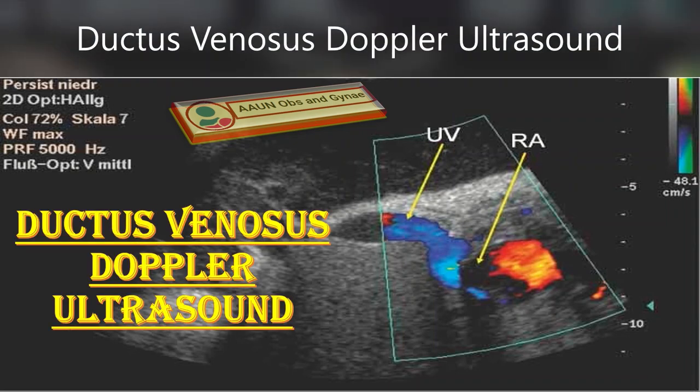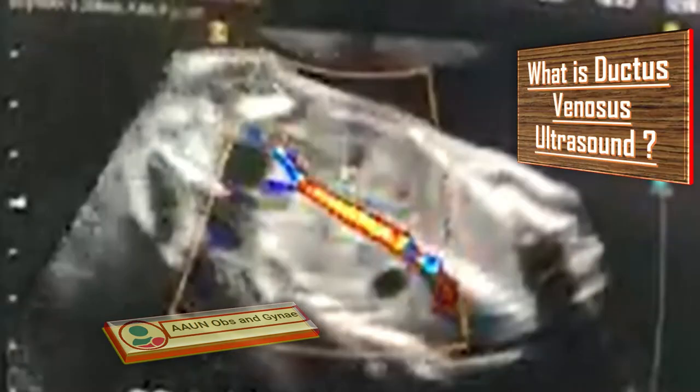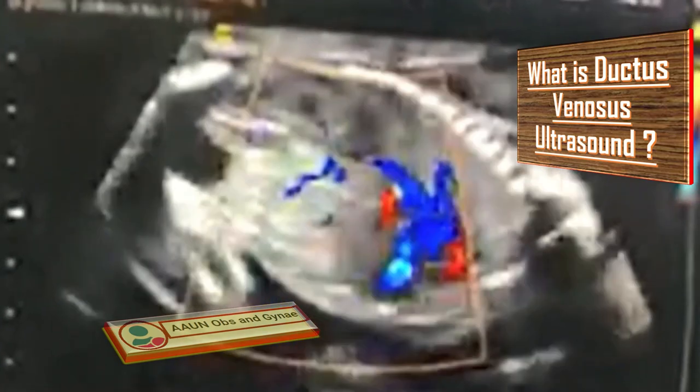Today we will talk about the ductus venosus Doppler ultrasound. We have already discussed the umbilical artery Doppler ultrasound, the uterine artery Doppler ultrasound, and the middle cerebral artery Doppler ultrasounds, and you can find their links in the i-button in the top right corner of this video.